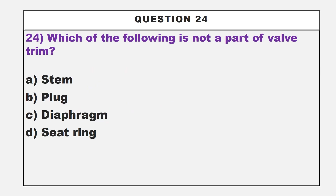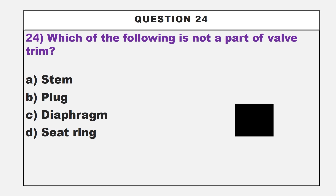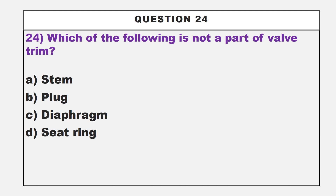Which of the following is not a part of valve trim? Option A: stem. Option B: plug. Option C: diaphragm. Option D: seat ring. The correct answer is option C, diaphragm. Diaphragm is not a part of valve trim. Stem, plug, and seat ring are all parts of valve trim.